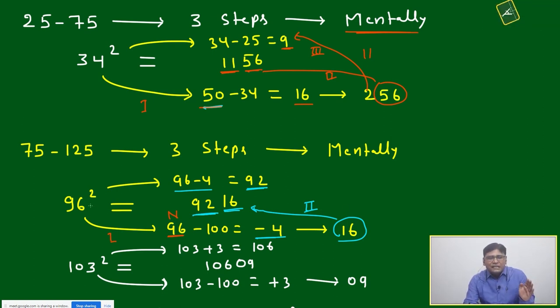How much deficient from 100? That much you just subtract. 93 square: just 93 minus 7, it will be 86. Initial two digits 86, last will be 49.